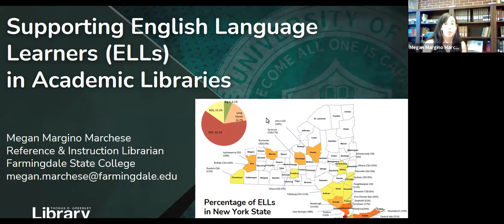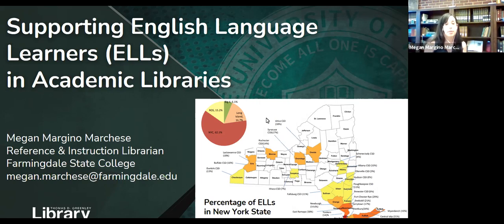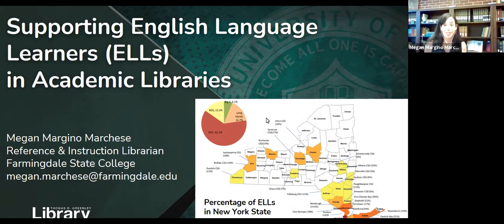How can academic libraries support ELLs? I'm focused on different ways that we can reinforce content and establish rapport with students to support the ELL community. We'll talk about some strategies you can use at the reference desk and in infolit classes. Before we get started, it's helpful to acknowledge and try to reduce any anxiety that students might be feeling about using the library or doing research. You can reassure students that you're there to help them and try to make them feel comfortable asking questions. The first technique is your rate of speech — you should speak naturally, but remember to speak clearly.